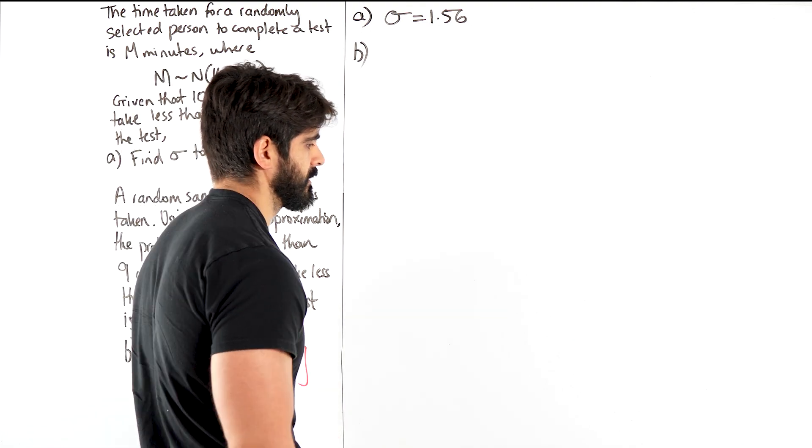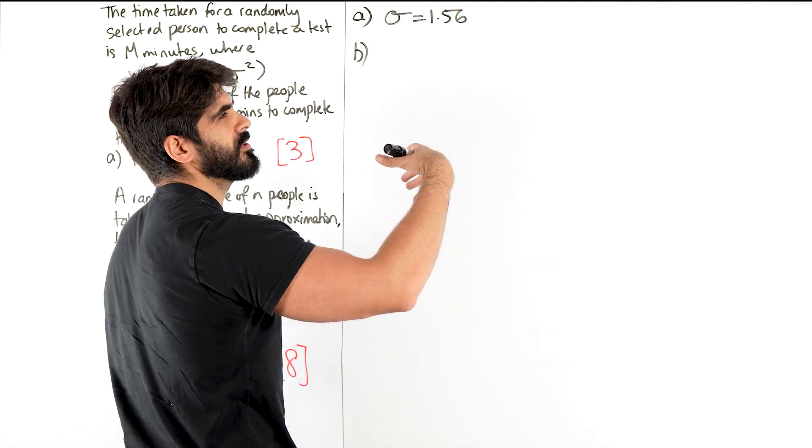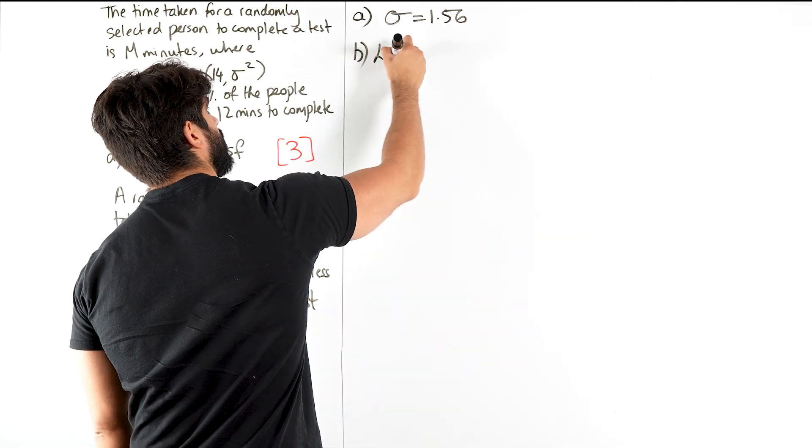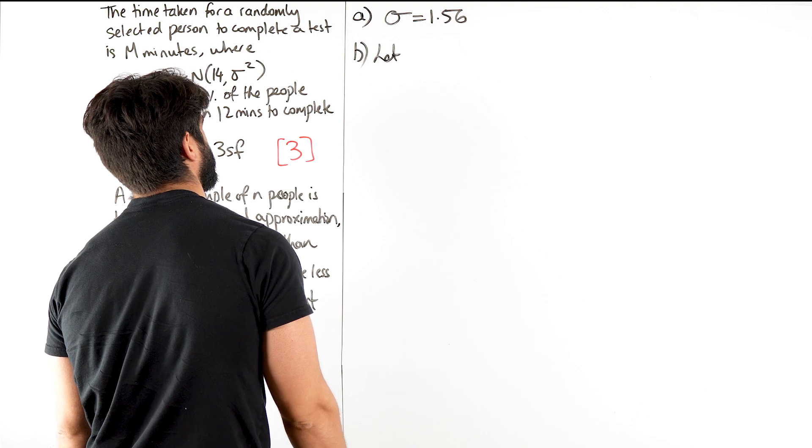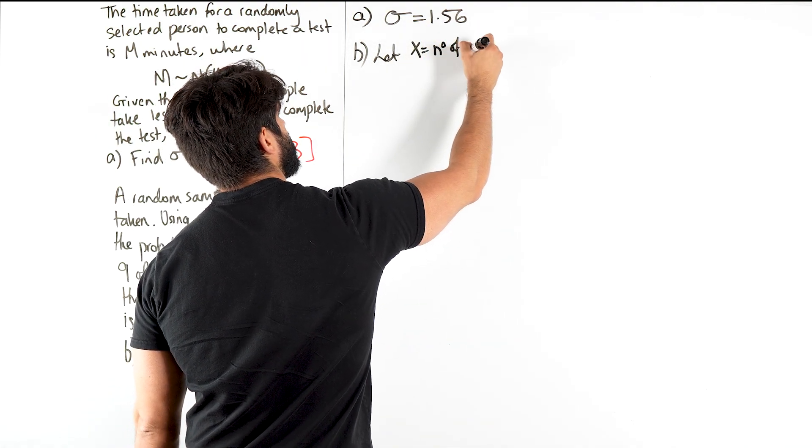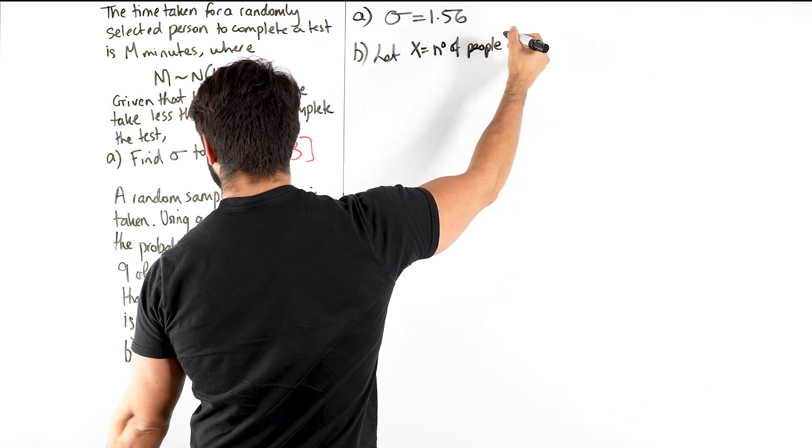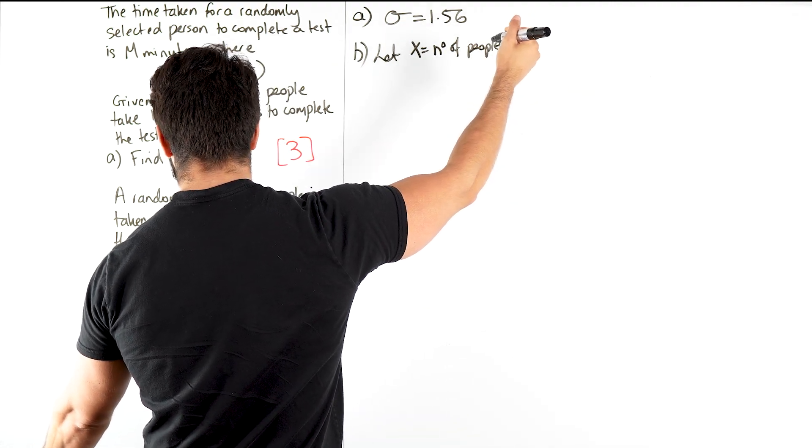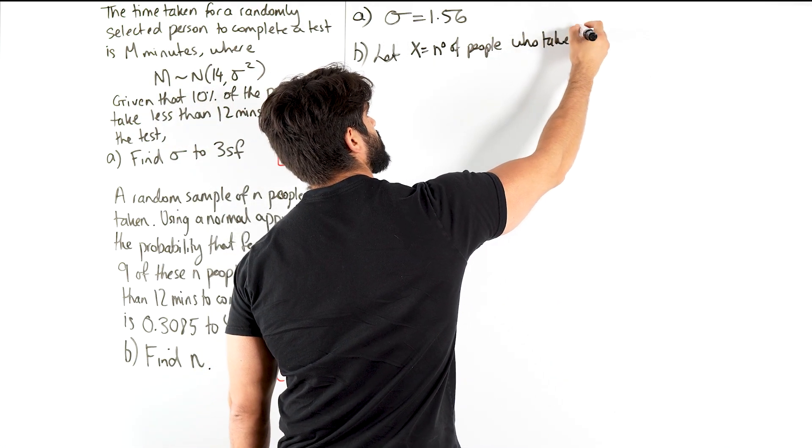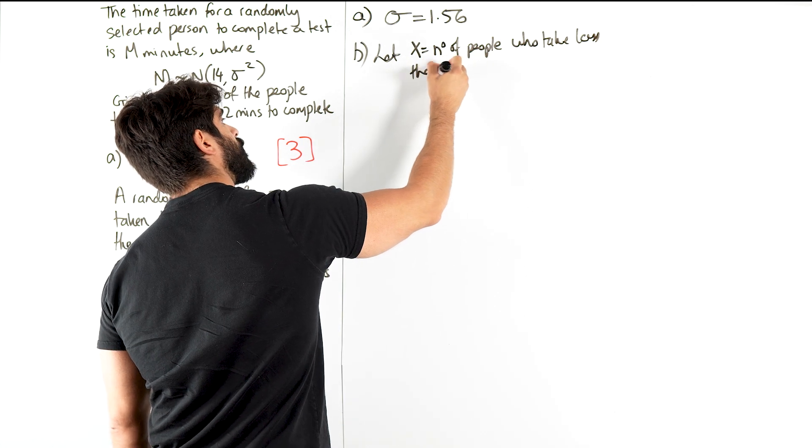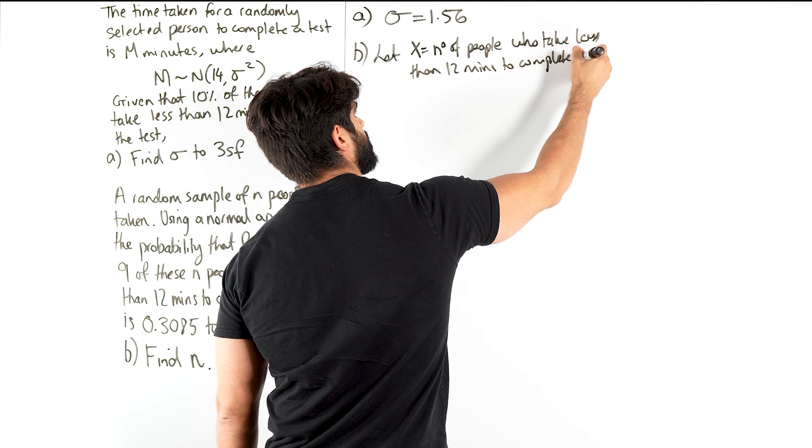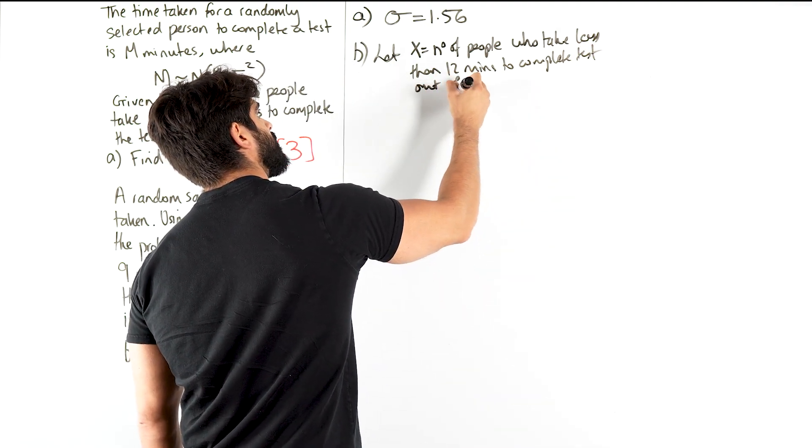Let's let Z, no. What did we use? We used M. N, let N. No, that'll be silly because we've used n. Why is it so hard to pick a letter? Let's just use X. Let X equal number of people who, what is it, probability take less than 12 minutes to complete it. So number of people who take less than 12 minutes to complete the test out of n.